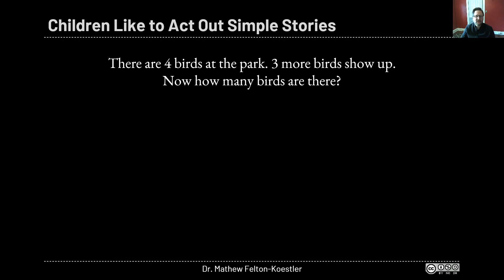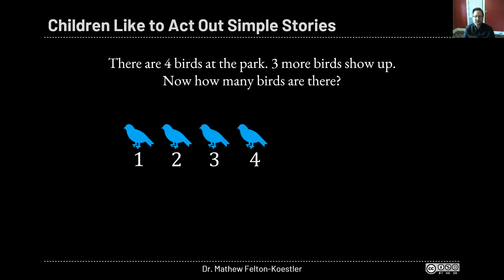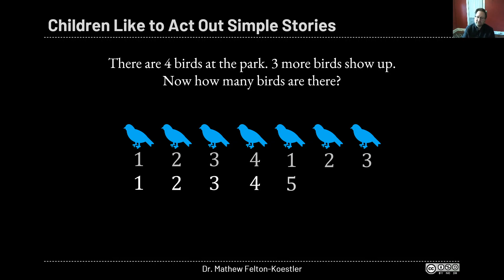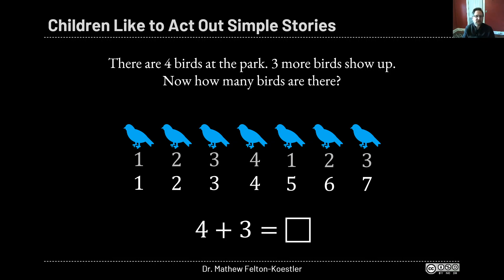A common strategy kids invent all on their own is: count out four objects or make four marks on paper, then add three more, and count all of them — one, two, three, four, five, six, seven. They follow the story just like it happened. Kindergarteners don't need to write equations, but if you want to model one, you could say: here's how a mathematician would write what you just did. The equation is four plus three equals box, and now we can put a seven in that box.